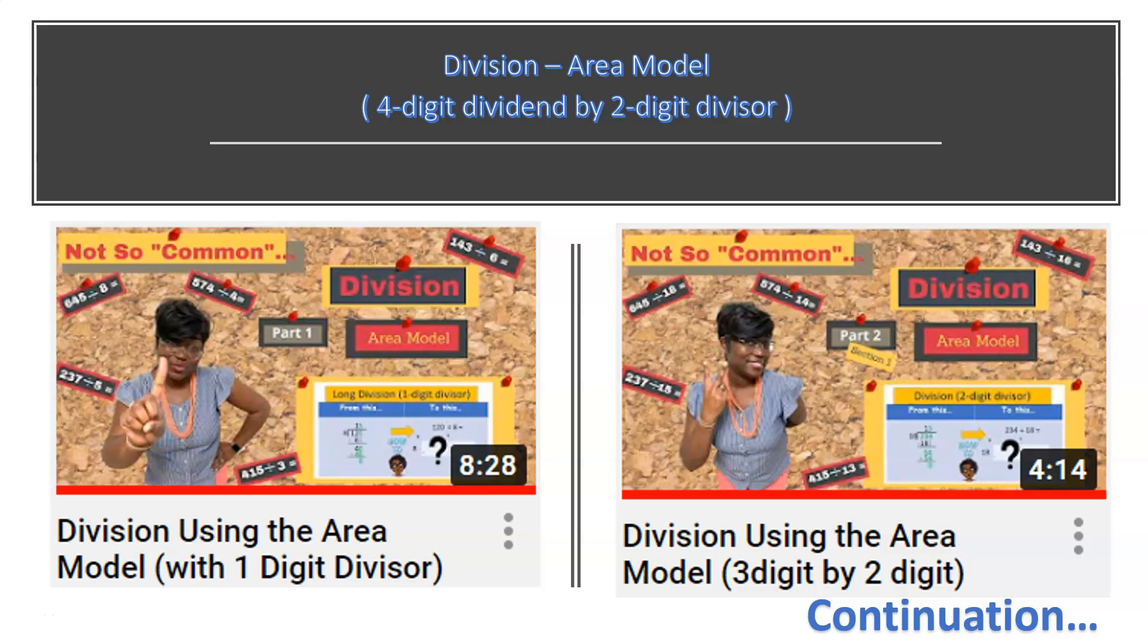Welcome back. Today, we will be concluding our series on division using the area model. Part one, we focused on dividing with a one-digit divisor, and part two, using a two-digit divisor and a three-digit dividend. Today we will continue dividing with a four-digit dividend by a two-digit divisor.